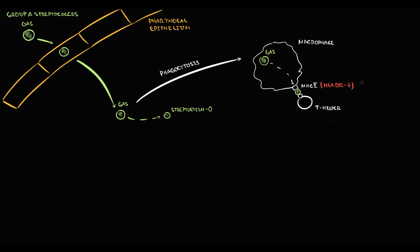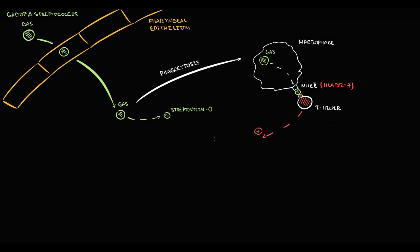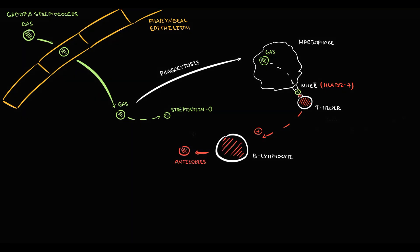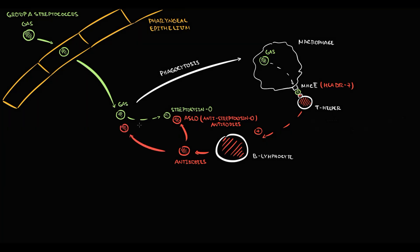So in individuals with the HLA-DR7 allele, the MHC2 receptor presents Streptococcus particles in an abnormal way, causing T-helpers to recognize them as antigen. T-helpers become activated, then activate B-lymphocytes, which begin to produce antibodies against everything related to Streptococcus. First, they produce antibodies against streptolysin O — called ASLO or anti-streptolysin O antibodies — and also antibodies against Streptococcus itself, called anti-streptococcal antibodies.